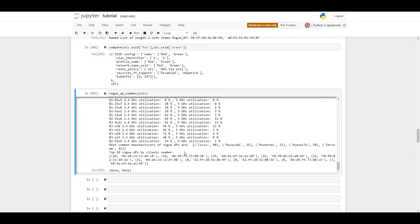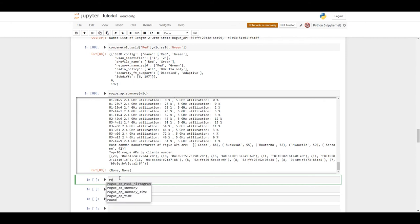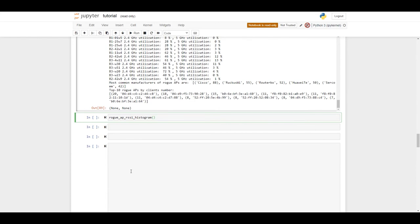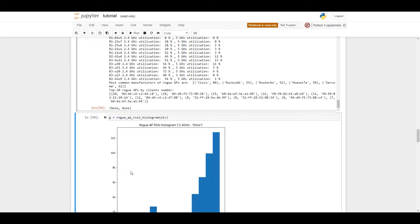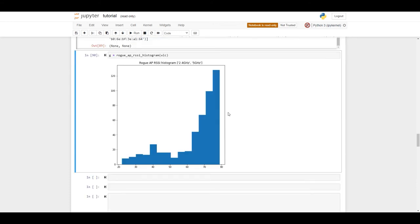Let's try to visualize the distribution of devices per signal strength. There is a special function for it named rogue AP histogram. Let's try to see the result. The result is here.